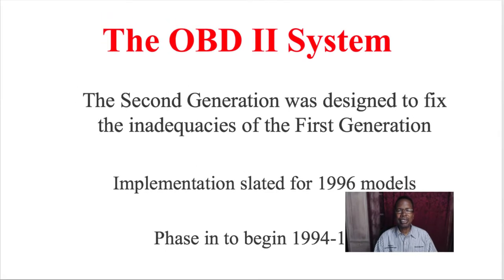The OBD2 system — the second generation — was designed to fix inadequacies of the first generation. For example, OBD1 did not check for misfires, system checks, or rationality. Meaning if the car had a misfire, it would not set the check engine light.